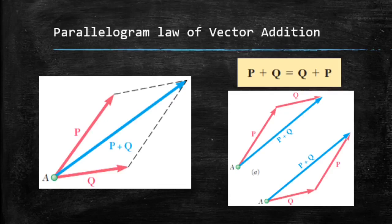We have seen the parallelogram law of vector addition, and in this image you can see both the parallelogram law and triangle law. Both are going to be the same: P plus Q is equal to Q plus P. This is the commutative law that is also satisfied.